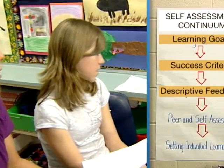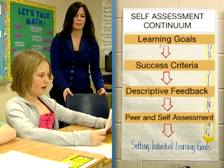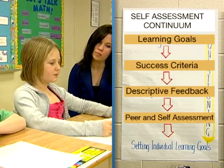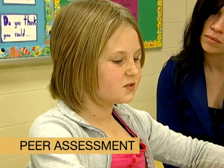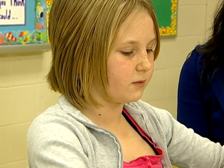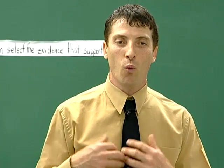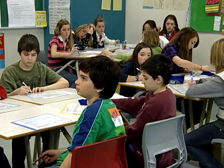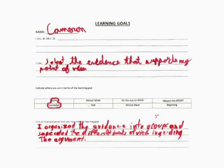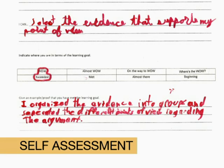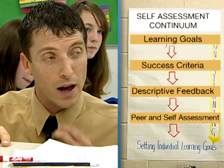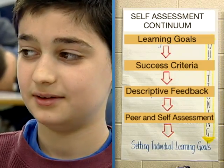Developing students' peer and self-assessment skills. Jeremy, one thing you did well was use correct punctuation. One other thing you did well was defining examples of physical and chemical changes. Something you can work on is using tools to confirm your spelling. In terms of the learning goal, I need you to indicate to me where you are right now and where you need to go next. Cameron, how do you feel in terms of learning goals so far? I organized the evidence into groups and separated the different points of view regarding the hard work. And you feel you have enough information on both sides that you've got what you need to move forward? Yep.